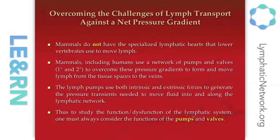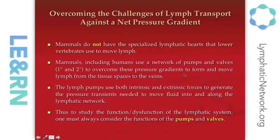You can see there are complicating factors to get lymph from the capillaries through the rest of the vascular system, through nodes, and out into blood. Other species have developed specialized lymphatic hearts, but mammals do not, so we use a different network of pumps and valves — both primary and secondary — to overcome these gradients. Lymphatic pumps use both intrinsic and extrinsic forces to generate the pressures needed to move fluid along the lymphatic network. To study function and dysfunction, we focus on analyzing these pumps and valves.